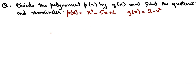Hello dear students, we are solving Class 10th mathematics chapter polynomials, and this time we are solving the division algorithm with different polynomials. We have a question: divide polynomial p(x) = x⁴ − 5x + 6 by g(x) = 2 − x².